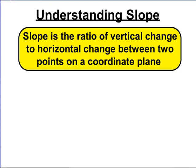So first of all, what is a slope? A slope is a ratio, which can be written as a fraction, of vertical change to horizontal change between two points on a coordinate plane. Vertical means up and down, horizontal means side to side. If we can find a change in those two directions, we can create a slope.